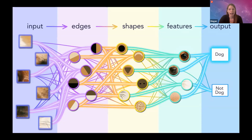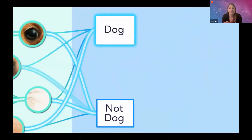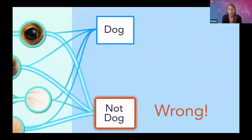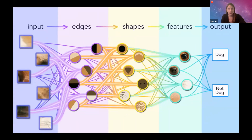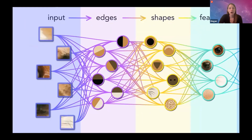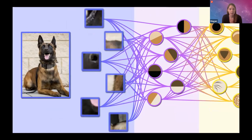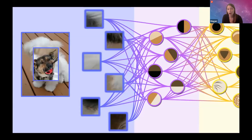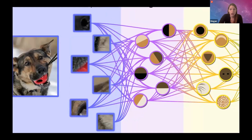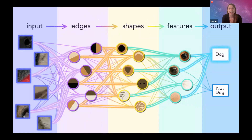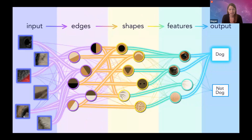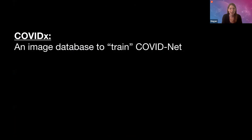The first time we show the neural network a picture of a dog, it's not going to do very well because it doesn't actually know what a dog is yet — it's just kind of guessing. Sometimes it's going to get it wrong, and when it does, that wrong signal is sent back through the network. By showing the neural network lots and lots of examples and correcting it every time it's wrong, the neural network can learn to really accurately identify what is a dog and what is not a dog. This is pretty much how COVID-Net learned.